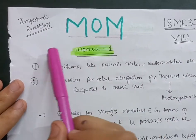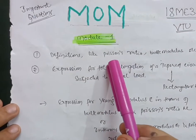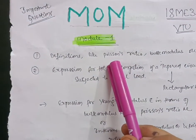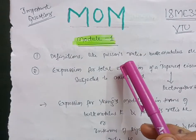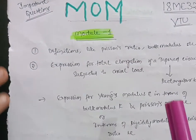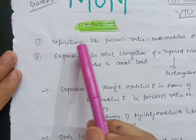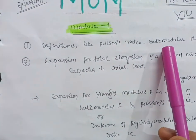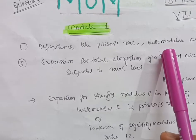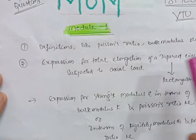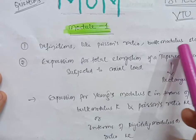You have to focus on this particular content so that you will easily conquer and clear this subject. In Module 1, there are definitions like Poisson's ratio, Bulk modulus, Rigidity modulus — go through and cover that theory part so that you will gain at least 6 to 10 marks in this particular module.